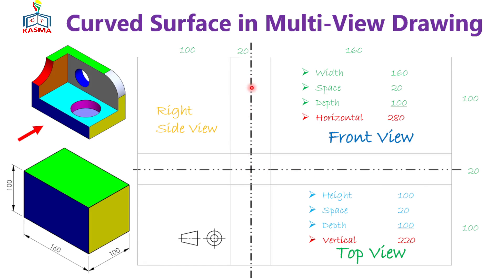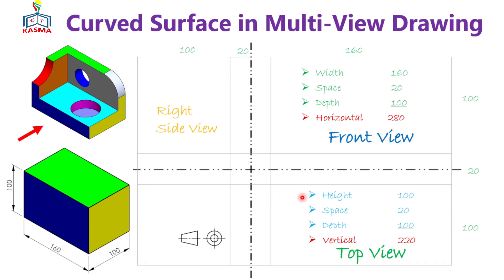The final horizontal total dimension will be 280 and the vertical dimension will be 220. Once we do that, we'll have a partition for a front view, for a side view, and for a top view. The front view will take 160 by 100 here, 100 by 100 will be for the right side view, and for the top view 160 by 100. Once you construct that, every view will be projected.